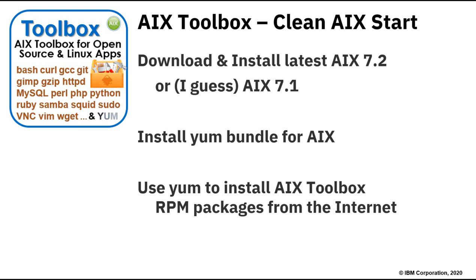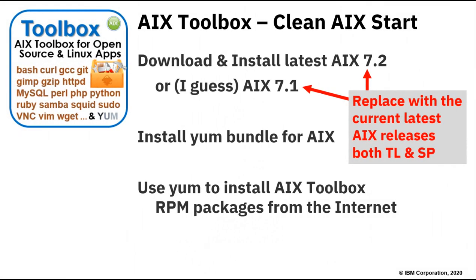To get access to the AIX open source toolbox, start with a clean copy of AIX — download and install the latest version of AIX 7.2 (you could use 7.1 but I haven't tried it). Then install something called the YUM bundle, which is very easy to do. After that you can use the YUM command to install any of those hundreds of RPM packages — whatever takes your fancy — and YUM will sort out all those prerequisite issues and download anything else you need. Note: 7.2 is the current version as of August 2020; if you're watching later, make sure you're on the current release, both technology level and service pack.